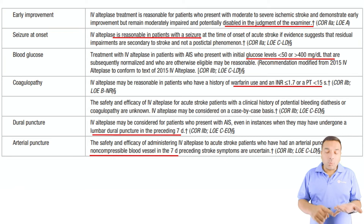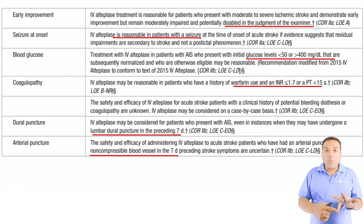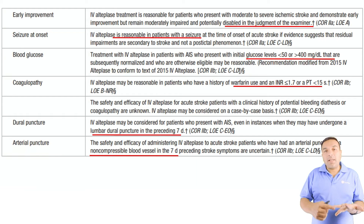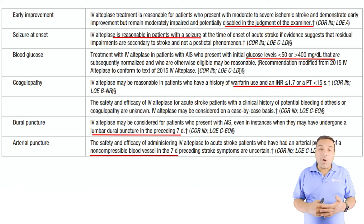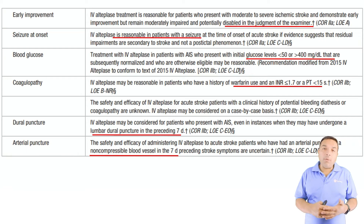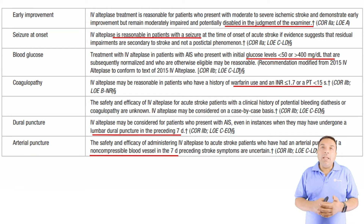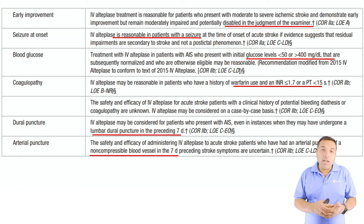In patients on warfarin with an INR less than 1.7, they are not considered coagulopathic. Point-of-care INR machines can assess this quickly. In those patients, you should consider giving TPA, though the class of recommendation is 2b — a weaker recommendation.